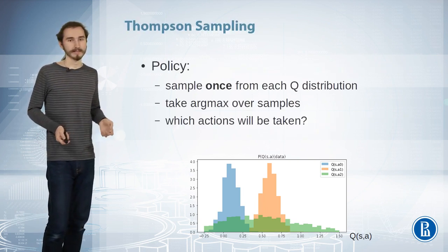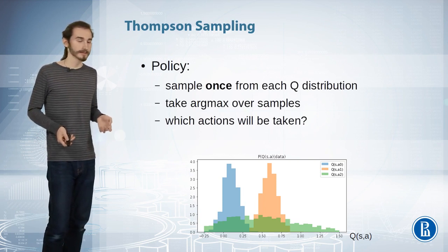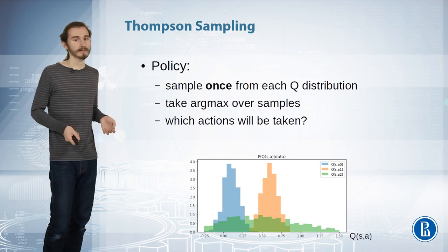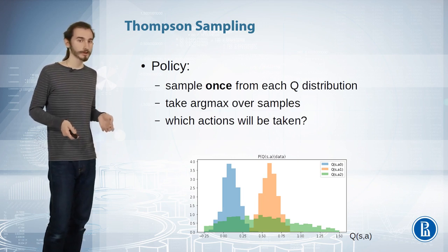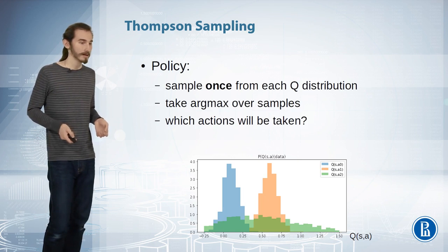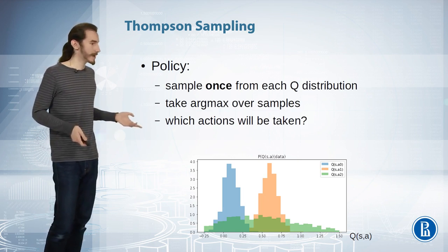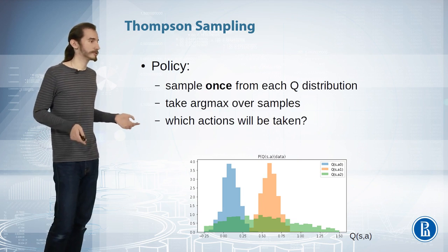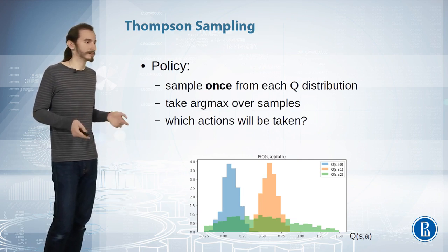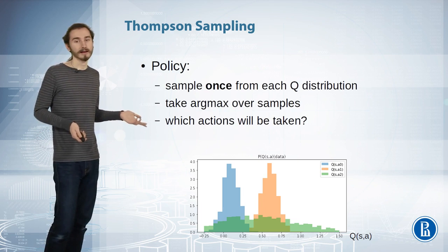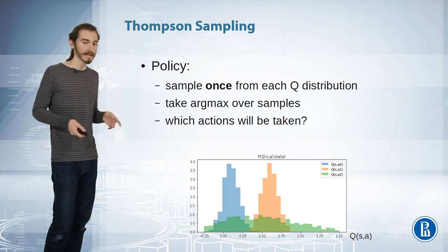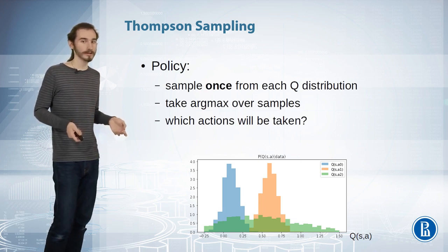Let's get to algorithms that decide the probability of picking green versus orange, and hopefully never pick blue. Let's begin with Thompson sampling. This algorithm is actually more general, but we'll study its simplest form for now. Thompson sampling suggests you take one sample from each of those distributions — whether they're normal distributions or empirical histograms — and pick the action whose sampled Q-value is largest.